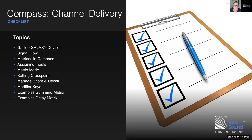Back on topic — Galileo Galaxy devices, with a spelling error, apologies about that. We're going to look at the signal flow in our Galileo Galaxy devices, the matrices — well, it's one matrix, but it allows you to set gain and delays. We'll discover how to assign inputs, what matrix modes there are, how to set cross points, how to manage, store, and recall matrices, how to use the modifier keys, and look at examples of both the summing matrix and the delay matrix, which is a new feature that came with the Galileo Galaxy devices.